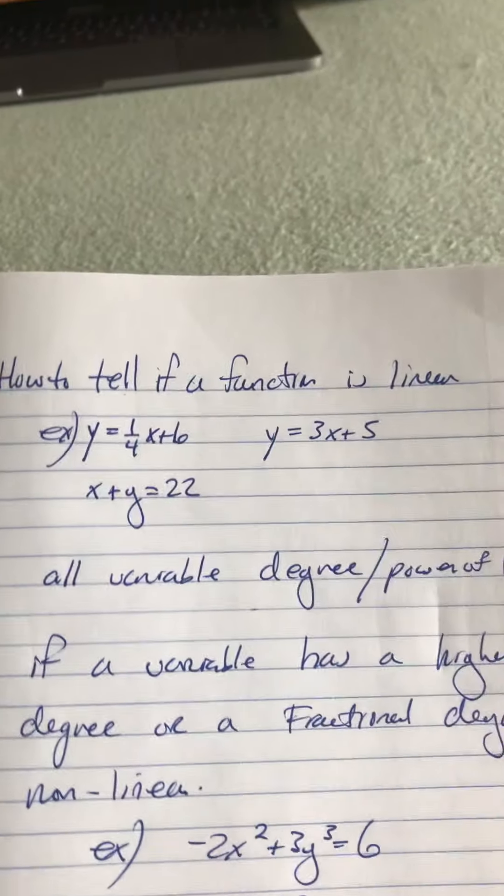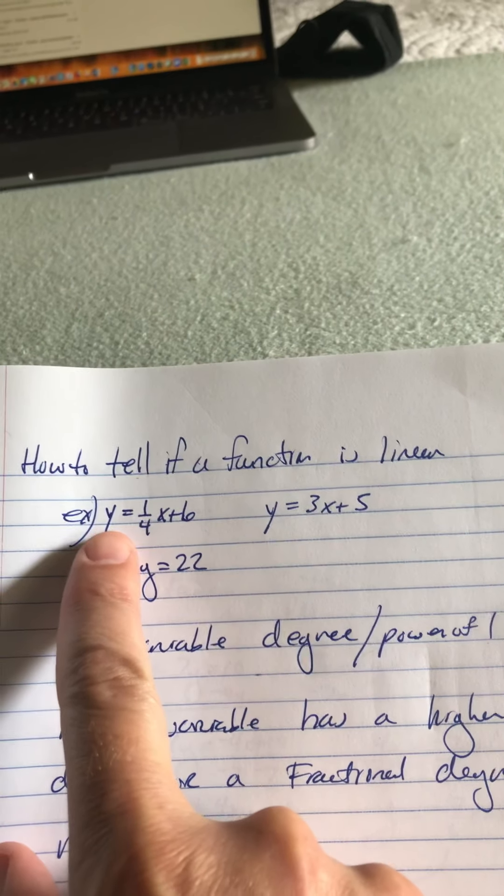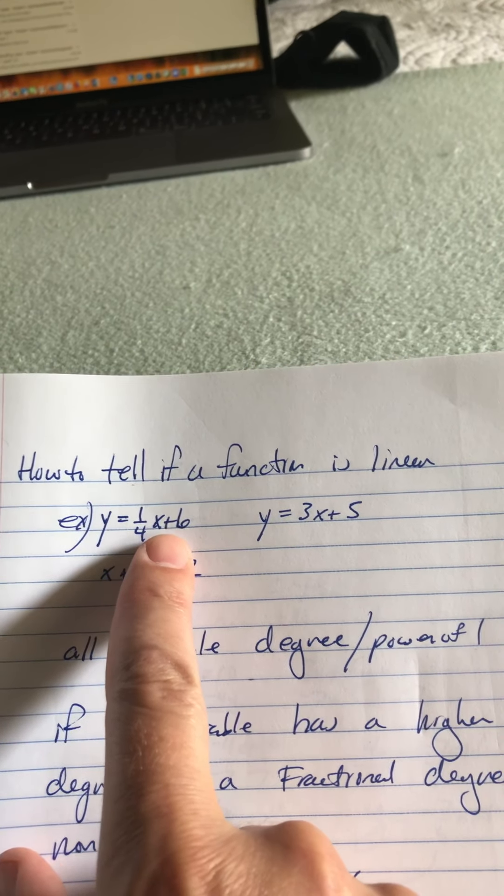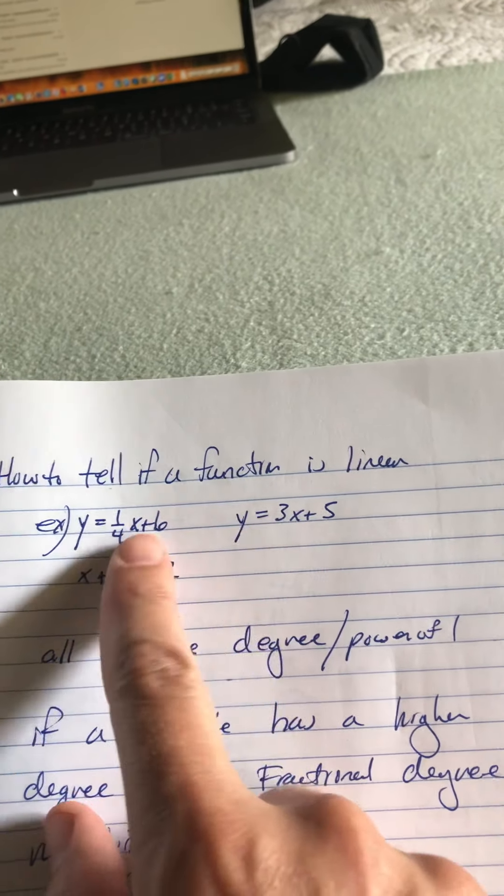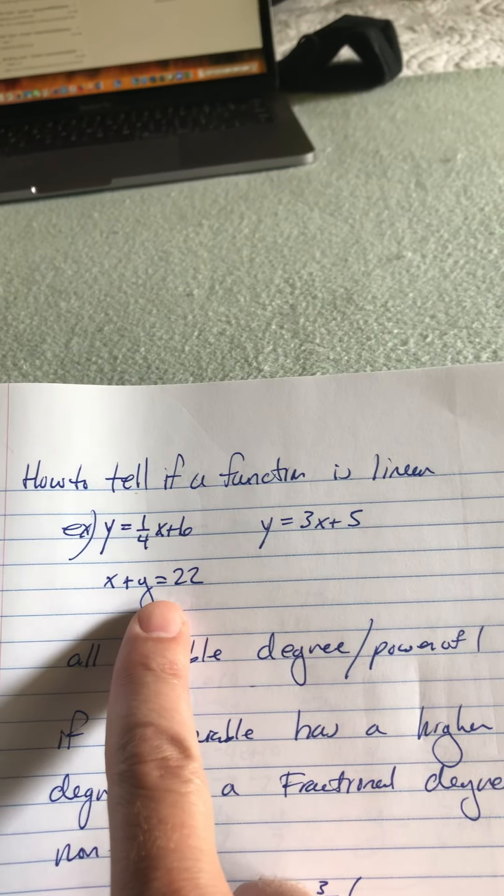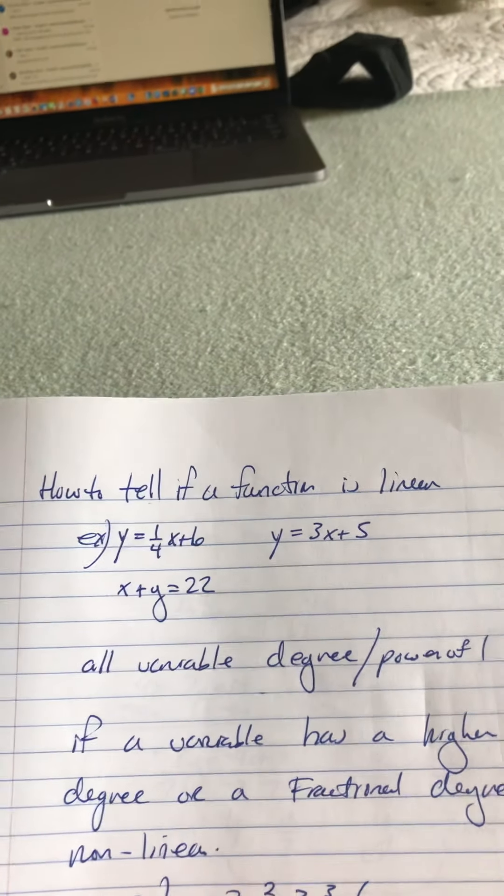All right, so the first thing that we're going to deal with is how to tell if a function is linear. So some examples of linear functions are y equals one fourth x plus 6, y equals 3x plus 5. These are in slope y-intercept form, and this is in standard form or general form, x plus y equals 22.